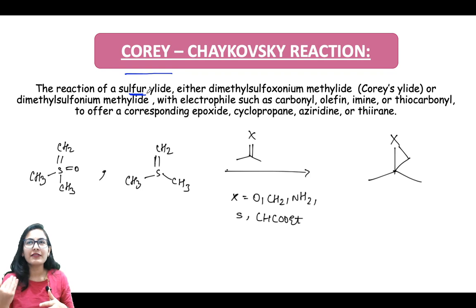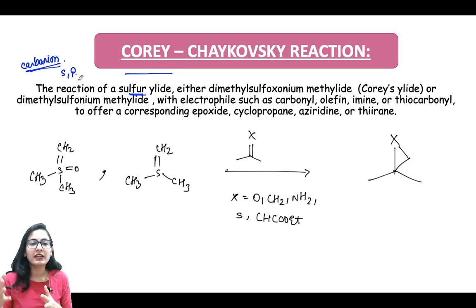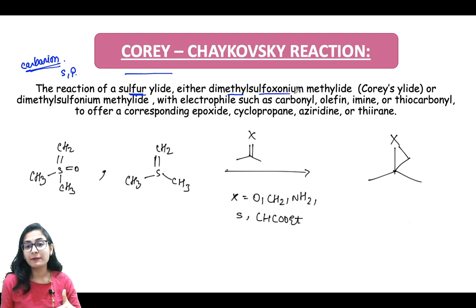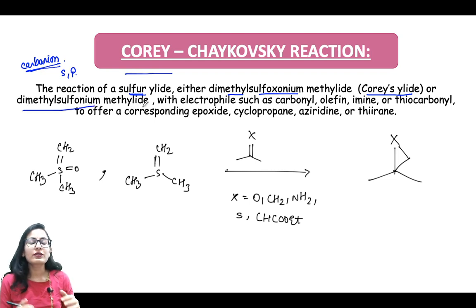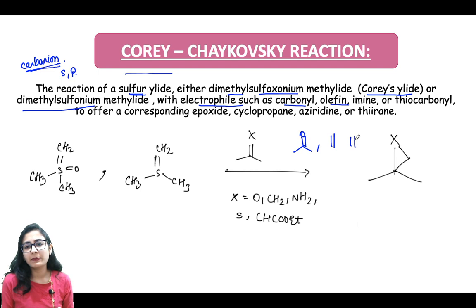Just like the Wittig reaction, an ylide is basically a carbanion stabilized by a hetero atom — it can be sulfur, phosphorus, or any other hetero atom. The sulfur ylide, either the dimethyl sulfonium ylide (the Corey ylide) or the dimethyl sulfoxonium ylide, reacts with an electrophile such as a carbonyl, an olefin, or an imine.